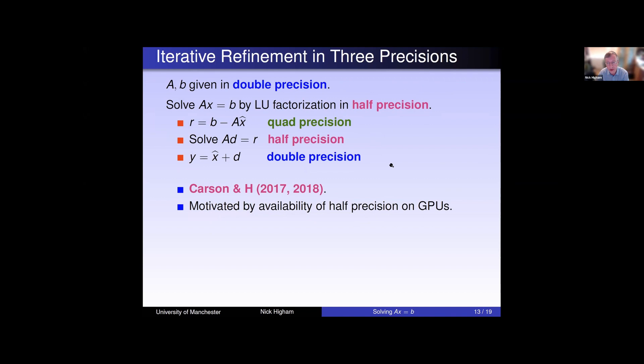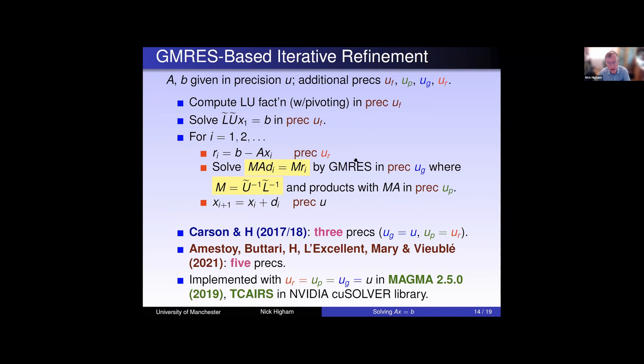From maybe 2015 onwards, we started to have GPUs providing half precision. This motivated Aaron Carson and I to look at having a three precision version of this algorithm. So now we're going to use half precision for the LU. The working precision is double, and we could even still use quad precision for the residual. There are other variants, other ways of combining the different three precisions in this algorithm. So this is motivated by the availability of half on GPUs. This works, but as written on this slide, the convergence will be limited by the condition number of A. It'll have to be bounded by 10 to the 4, no larger for this to work as shown here.